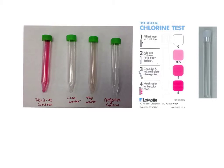Chlorine test number 2. In this tube we have 5ml of water. We are going to add this white tablet to see if chlorine is present in the lake water. Put the cap on and wait until it dissolves. The pink color shows that there are chlorine traces in the water.